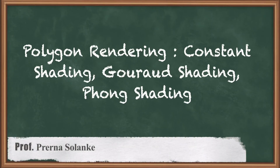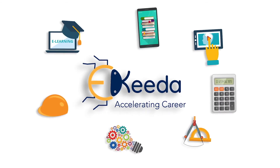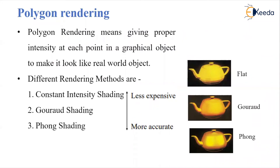Hello students, today we are going to learn about the topic polygon rendering — that is constant shading, Gouraud shading, and Phong shading. Polygon rendering means giving proper intensity at each point in a graphical object to make it look like a real world object. The first technique is less expensive and less accurate, and moving forward the third one is more accurate compared to these two and it is more expensive.